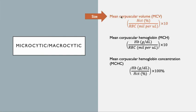The MCV tells us about the size — the mean corpuscular volume, what is the volume of red blood cells in a given sample? It's calculated as the hematocrit divided by the RBCs per microliter times 10. That tells us about whether the anemia is microcytic or macrocytic. If the MCV is high, then it's macrocytic; if it's low, then it's microcytic. Easy.